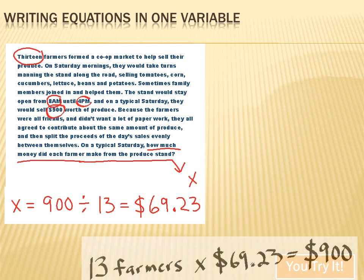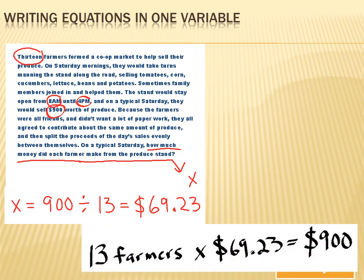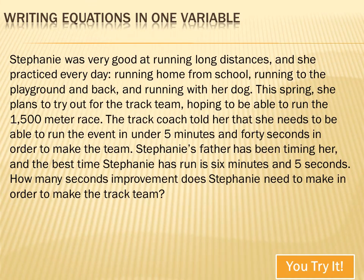Now we go back and check — remember the C for Check in CUCCV. We plug our answer of $69.23 back in: there were 13 farmers, and 13 times $69.23 gives us the $900 they typically made on a Saturday. Give this next one a try — see if you can convert it into an algebraic expression and then solve it. Hit your pause key, try your luck, then hit your forward key to move on to the answer.